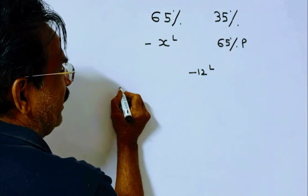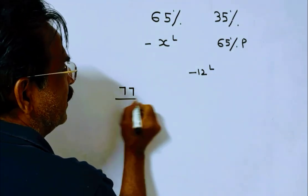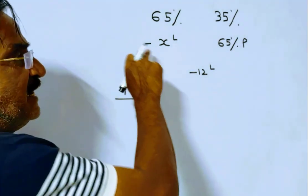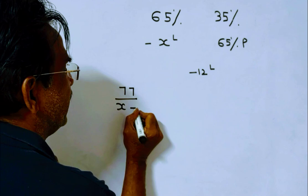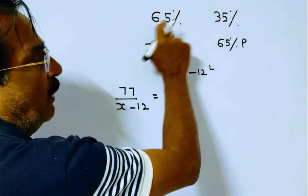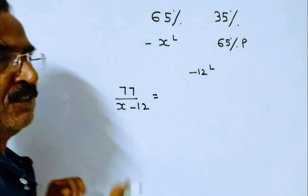So x minus 12 is equal to the quantities ratio, which is 65 to 35. This simplifies to 13 by 7. Therefore, 13x minus 156 equals 7 times 7, which is 49.